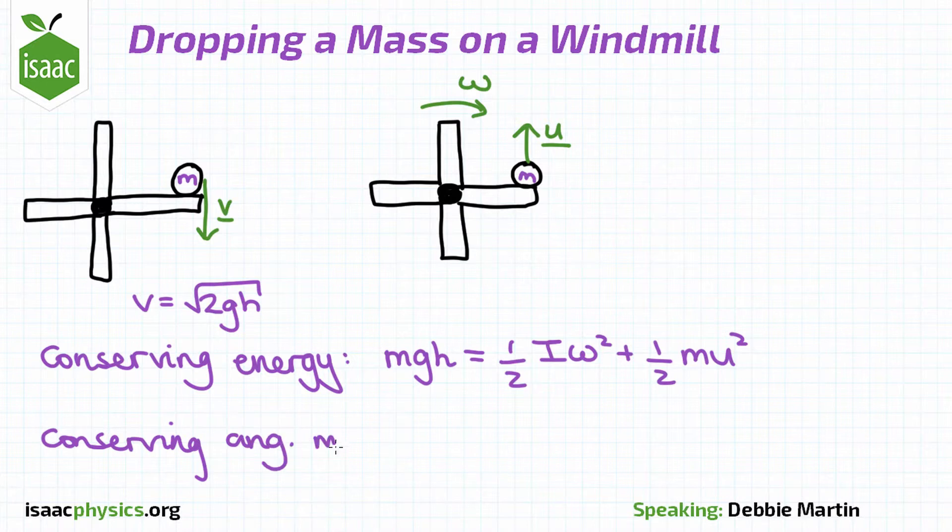We can also conserve angular momentum about the axle, since we know that the ball comes in contact at distance L from the axle.